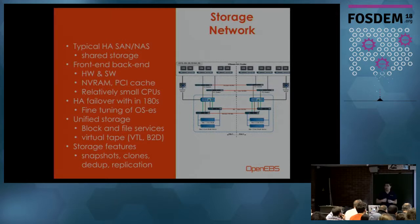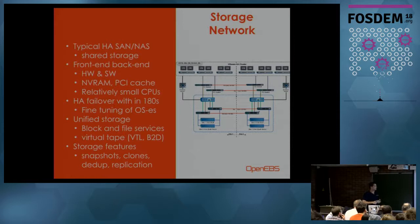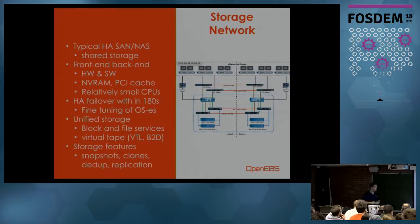We have the front-end protocols that we all love and hate — iSCSI, NFS, SMB, or what have you. At the lower end we have the storage-related protocols. These front-end systems had NVRAM to accelerate write caches — that's the special hardware you did not have for yourself. PCI caches, not NVMe devices — they looked a lot like it but it was not the same as an NVMe device today. The CPUs were relatively small; around 2007 they were still using Pentium CPUs.